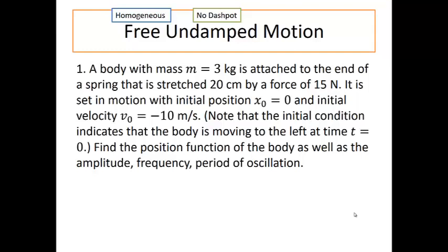Suppose we have a body with a mass of three kilograms, and it's attached to the end of a spring that is stretched 20 centimeters by force of 15 Newton. It is set in motion with an initial position of zero, an initial velocity of negative 10 meters per second. The initial condition indicates that the body is moving to the left at time zero. We want to find the position function of this body, as well as the amplitude, frequency, and period of oscillation.